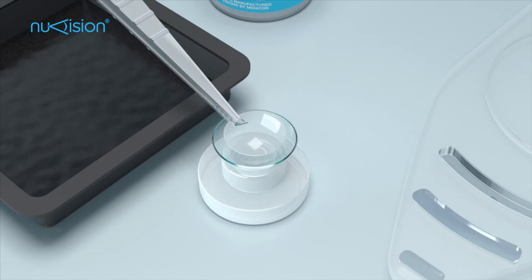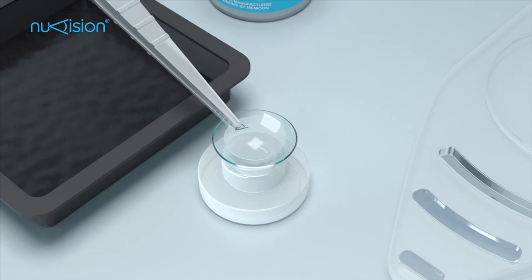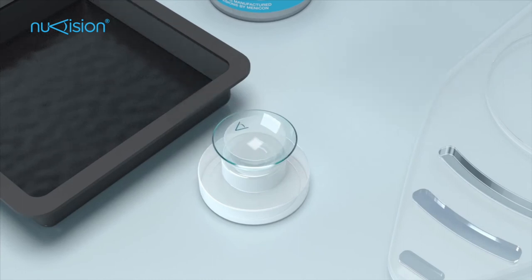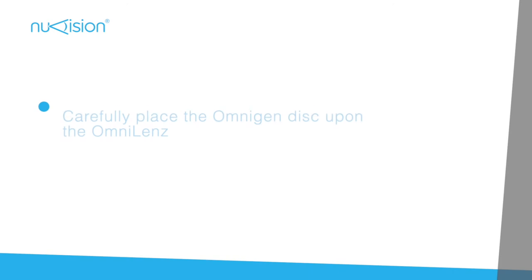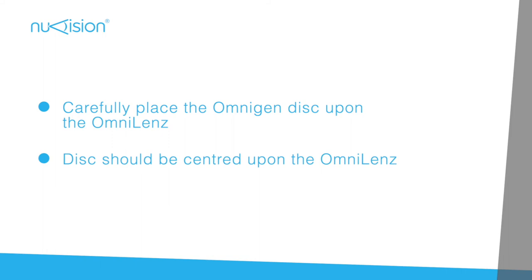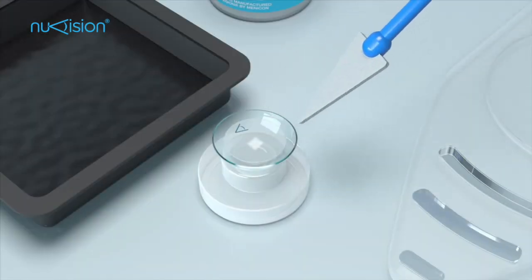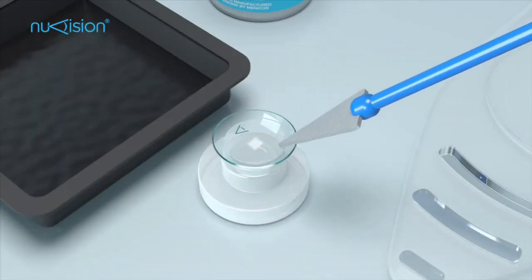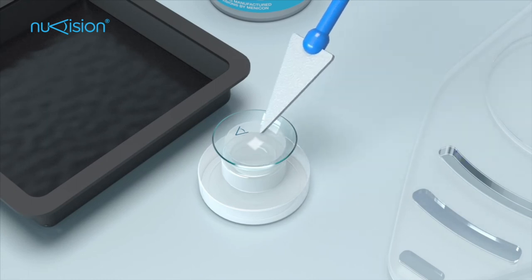Carefully insert the Omnigen into the centre of the OmniLens. Slowly allow the Omnigen disc to make contact with the lens, starting at one edge before gently releasing the forceps from the tissue. Now allow the Omnigen disc to rehydrate in the OmniLens for 2 minutes. If the Omnigen is not centred in the lens or is creased, use a surgical spear or forceps to carefully adjust the position and smooth out the disc.